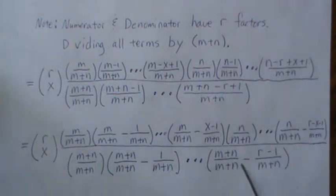This is 0, but that's 1. So this term goes to 1. This goes to 0, that goes to 1. So each one of these terms go to, you know, limit to 1. So they just go away.